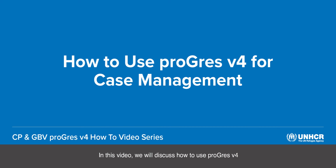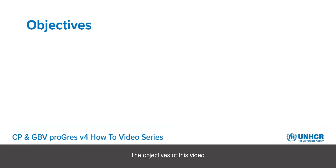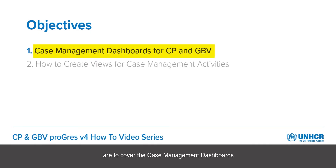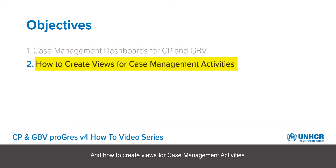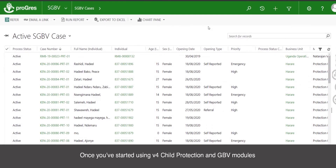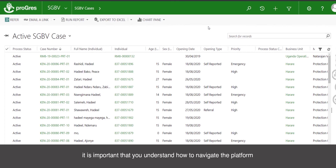In this video we will discuss how to use Progress v4 for your case management needs. The objectives of this video are to cover the case management dashboards for child protection and GBV modules, and how to create views for case management activities. Once you've started using v4 child protection and GBV modules for your case management, it is important that you understand how to navigate the platform to really support your case management processes.